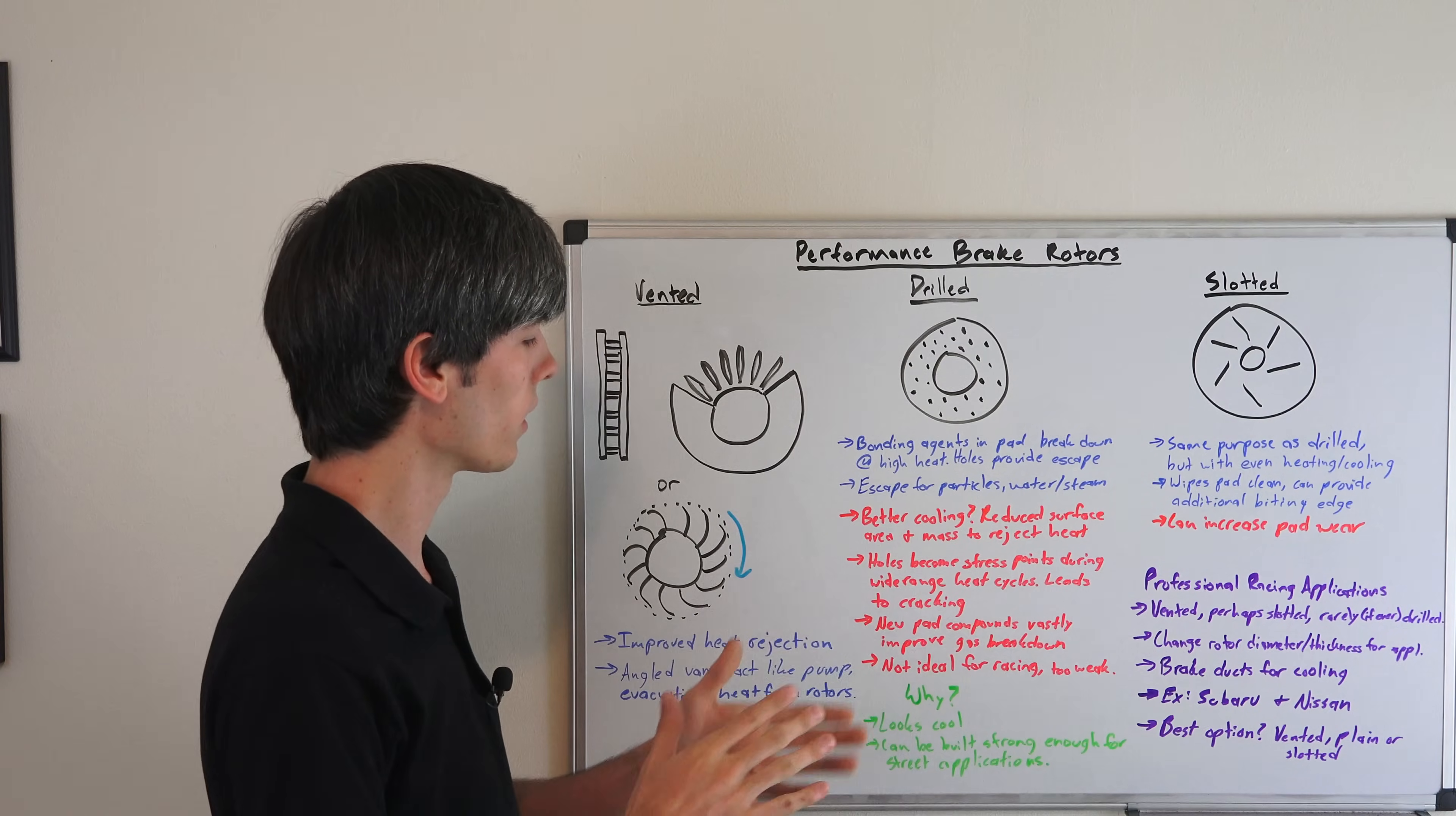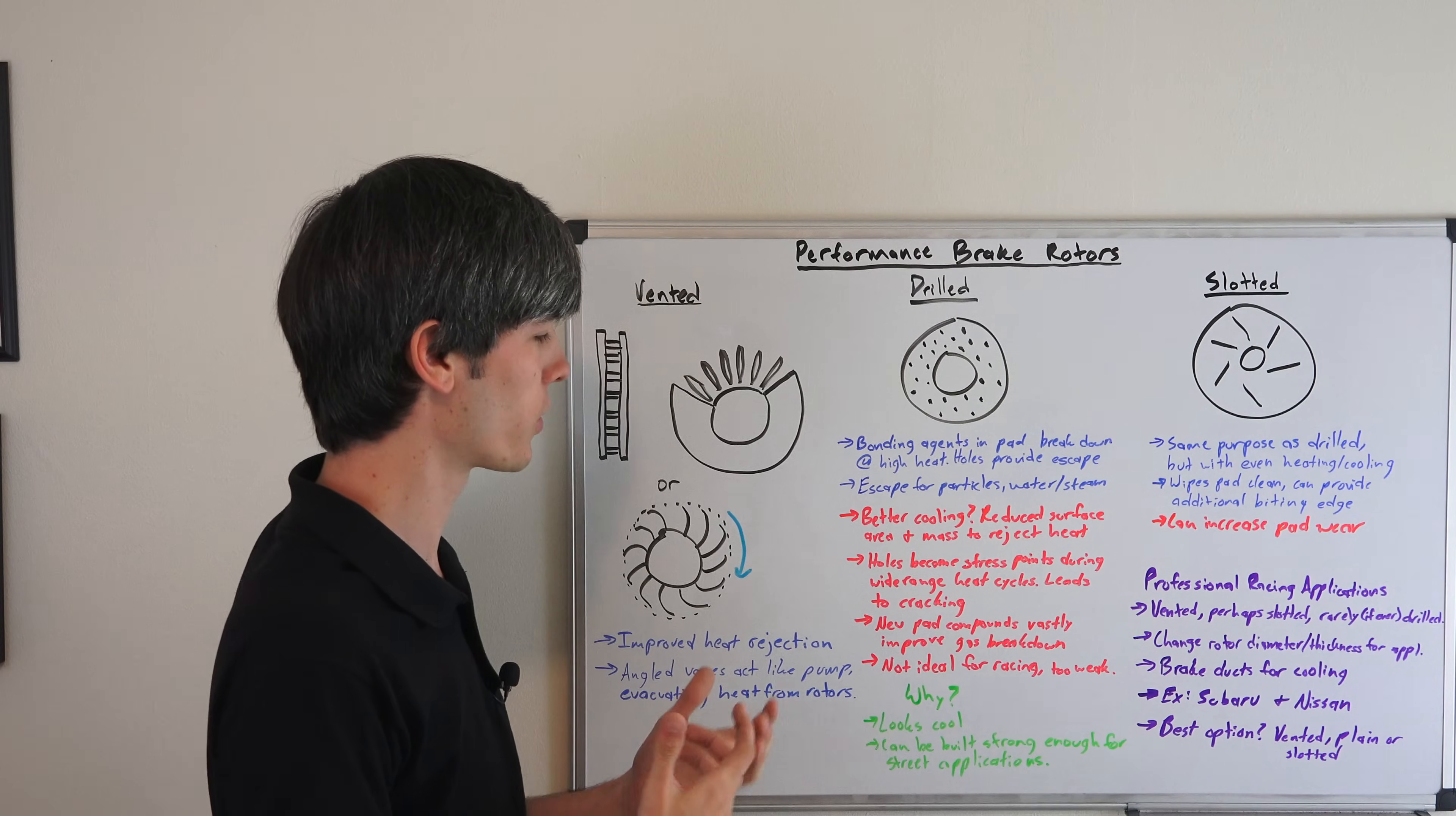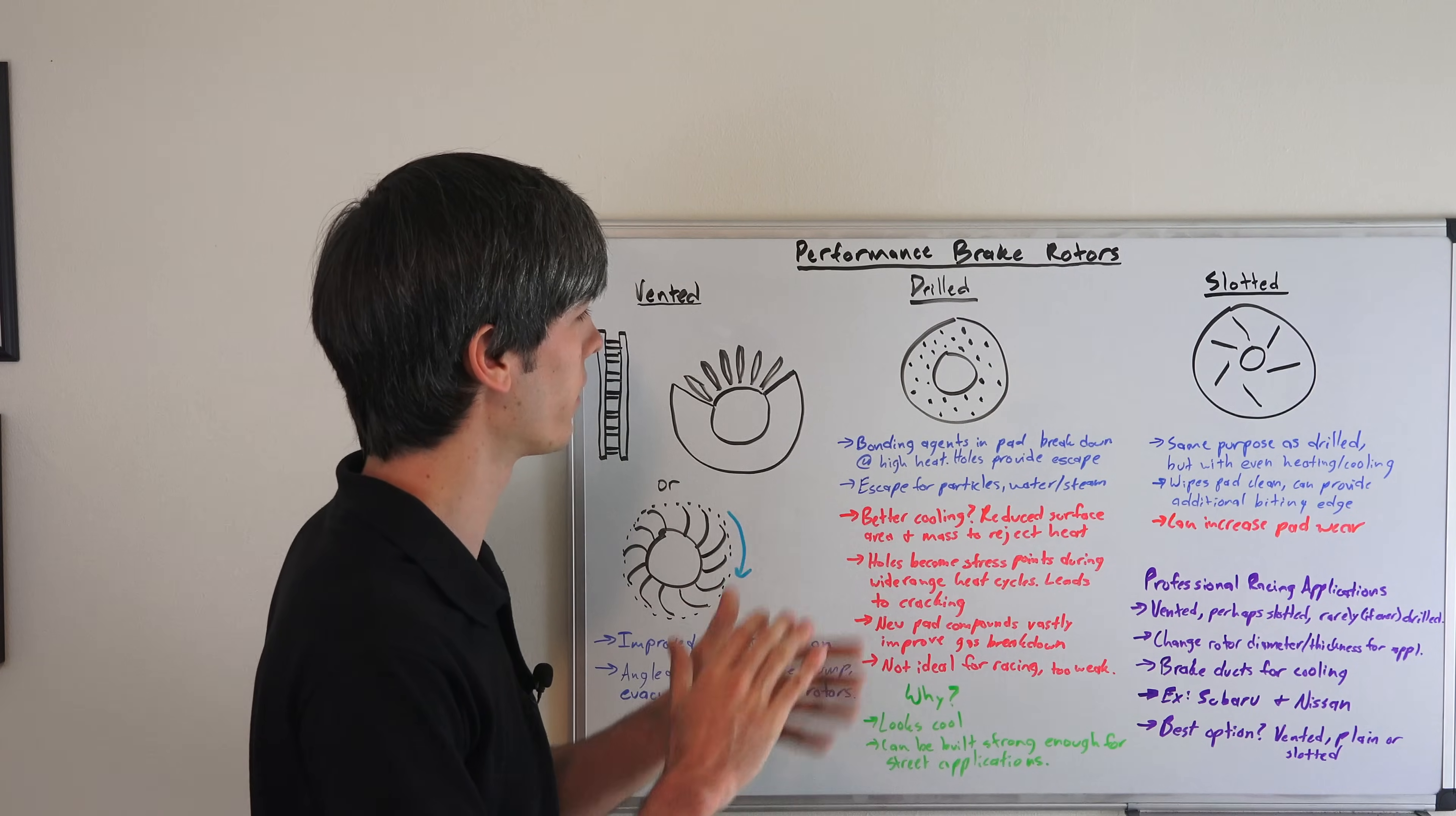So why do you see drilled rotors on AMG cars, on Ferraris, on high-end street-based cars? Well, because it looks awesome, and it does look awesome. But honestly, that's pretty much it. The other thing is they can be built strong enough for street applications. So it's not necessarily an advantage to use them, but they look cool and they can be built strong enough to last. If you're going to do it yourself, I wouldn't recommend using drilled, but nonetheless...